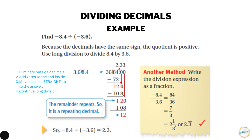An alternative method if you're not a fan of long division: set it up as negative 8.4 over negative 3.6 like a fraction. Get rid of both negatives since we know the answer is positive, then move the decimals one place to the right on top and bottom — that's like multiplying by 10 — giving 84 over 36. Simplify that to 7 over 3, which as a mixed number is 2 and one third. Since one third equals 0.3 repeating, the answer is 2.3 repeating.